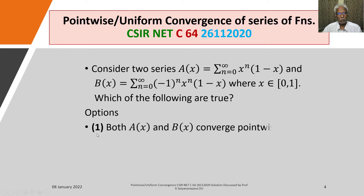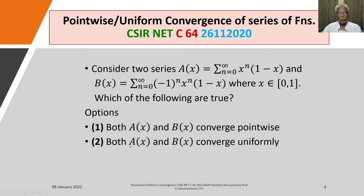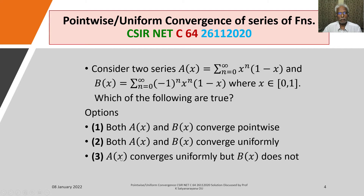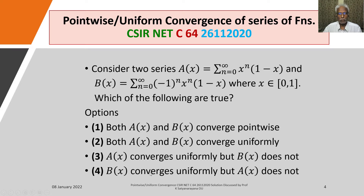Option 1: Both A(x) and B(x) converge pointwise. Option 2: Both A(x) and B(x) converge uniformly. Option 3: A(x) converges uniformly but B(x) does not. Option 4: B(x) converges uniformly but A(x) does not.